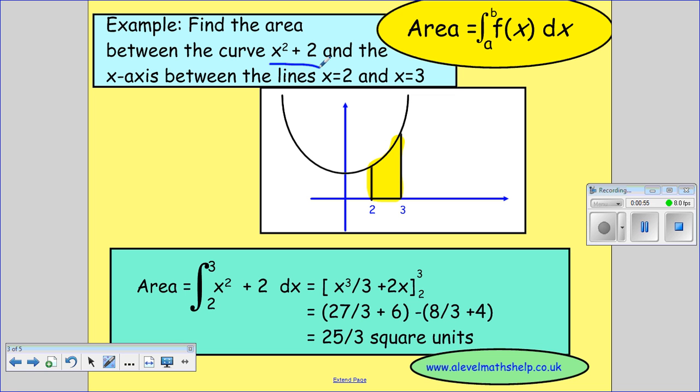So x squared plus 2 is just a good little bit of revision of transformation. This is a parabola which has been lifted up by 2. And we wish to find the area between lines 2 and 3. So we want to find the area inside this bit here.